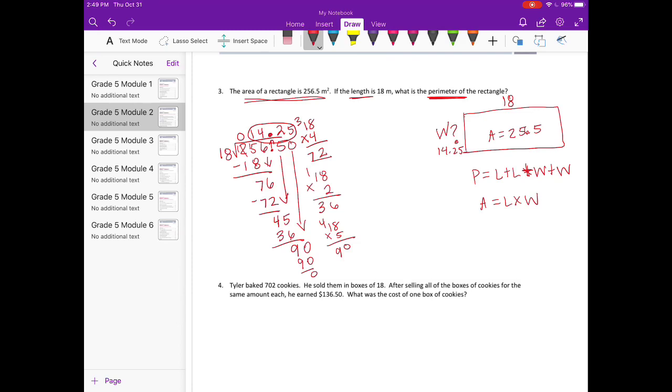And now to find the perimeter, we need to add up all the sides. So this is 18 and this is 14 and 25 hundredths. So we need to add all of those together. So let's do 18 plus 18. That's 36. 18 times 2 is 36. So we have 36 plus 14 and 25 hundredths plus 14 and 25 hundredths would be 28 and 50 hundredths. And we need to add the 36 to that. 64 and 50 hundredths. And we're talking meters.